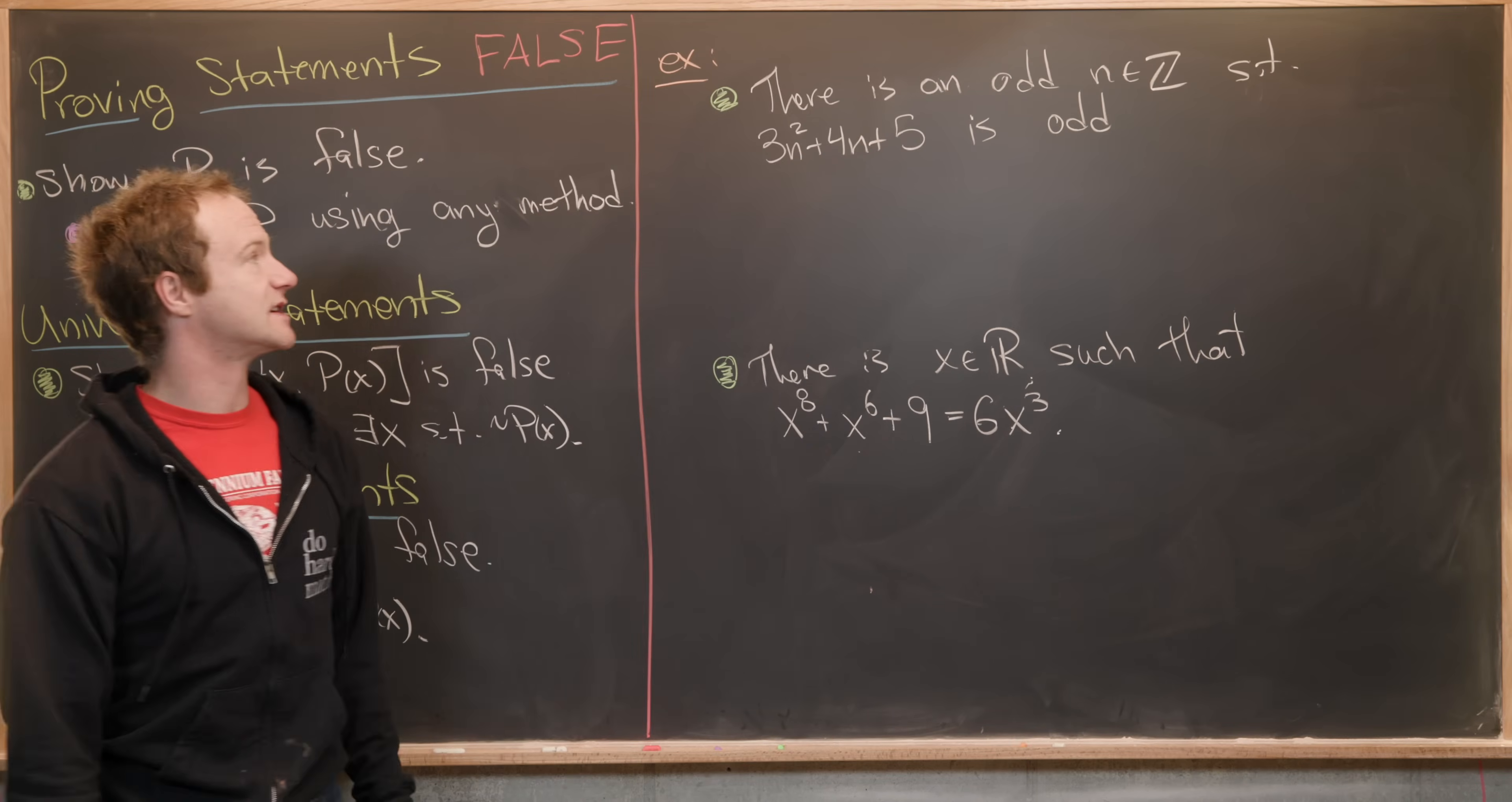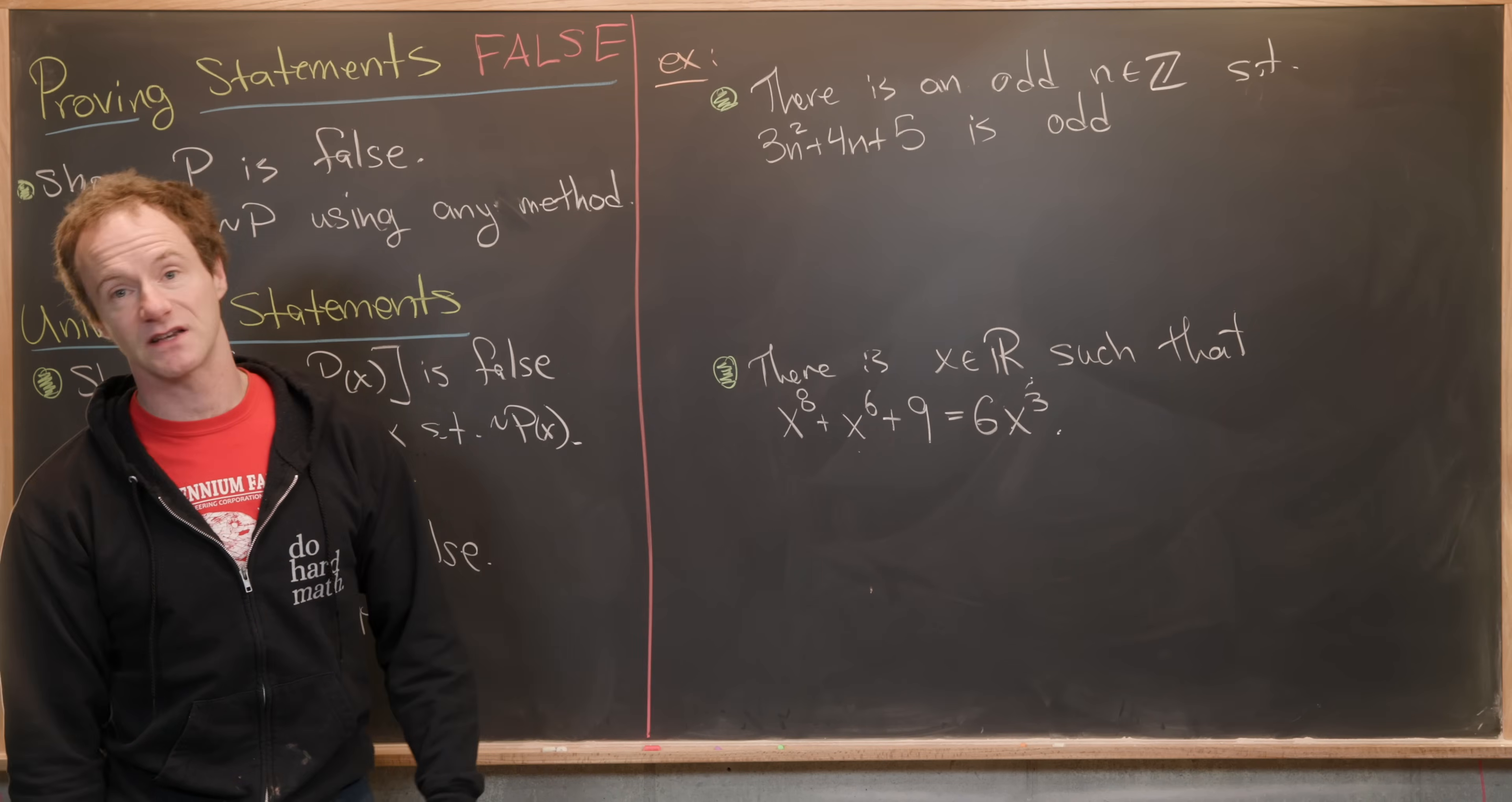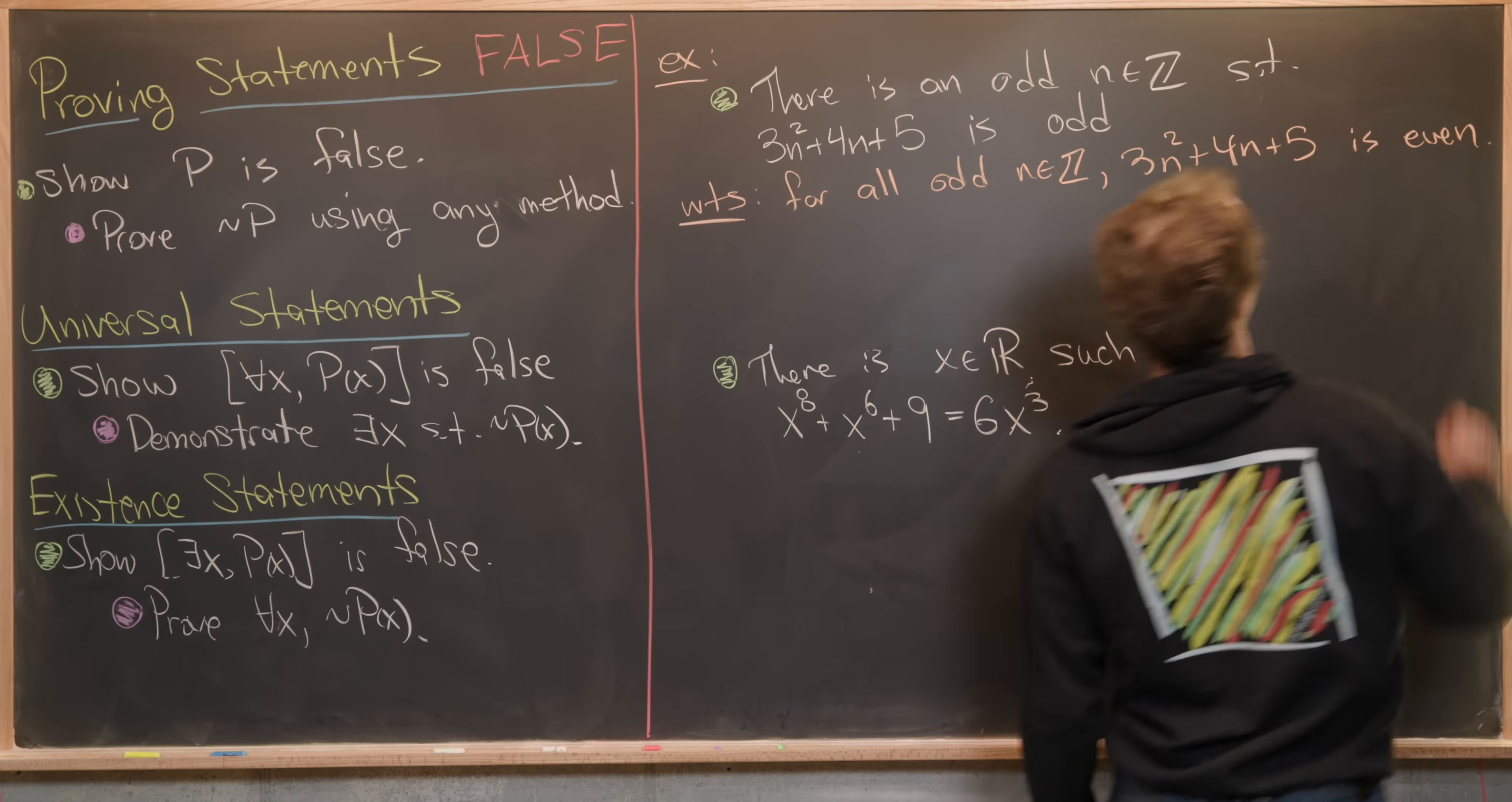Let's translate these into their negative and then show that the negative is true. To disprove this statement, there is an odd integer N such that 3N squared plus 4N plus 5 is odd, we want to show for all odd integers N, 3N squared plus 4N plus 5 is even.